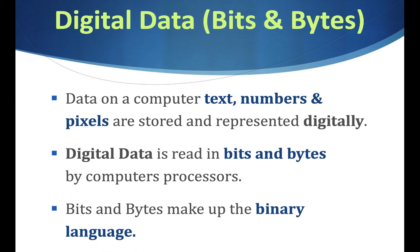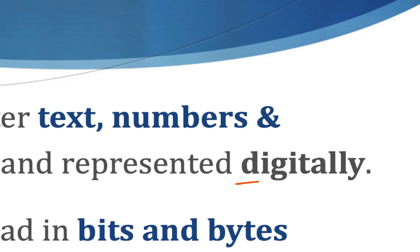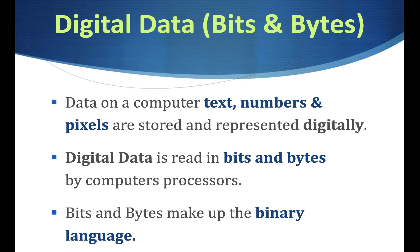First of all, we're talking about digital data so far in our first unit. Bits and bytes we haven't talked about, but we've talked about pixels. Now, data on a computer, whether it's text, you're writing papers, numbers, or pixels, are stored digitally. You always hear that term, digitally. That means it's stored as a digit. Notice the word digit is in there. That means it's stored as a number. That's why it's called digitally. Digital data is read in bits and bytes by computer processors.